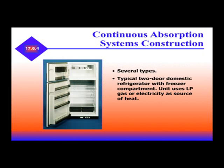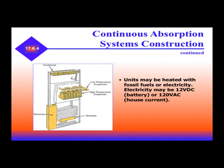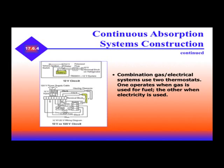For continuous absorption system construction, there are several types. A typical two-door domestic freezer uses LP gas or electricity as a heat source. Units can be heated with fossil fuels or electricity — electricity may be 12 volts DC or 120 volts AC. A switch is used to change over from DC to AC. Combination gas-electric systems use two thermostats: one operates when gas is used for fuel, the other when electricity is used.